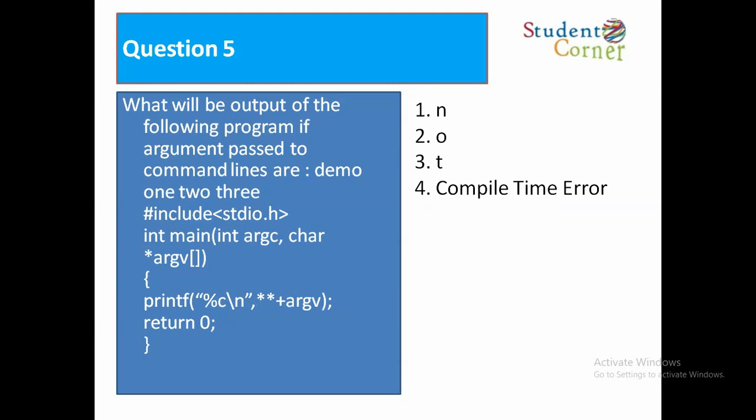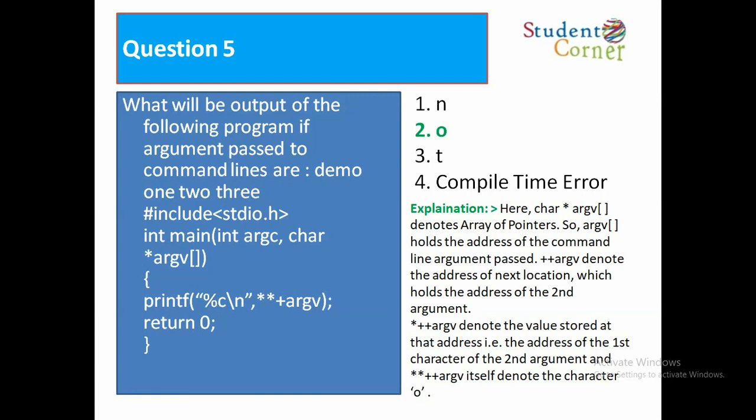Question 5: What will be the output of the following program if arguments passed to command line are demo, demo, 1, 2, 3? Program: #include stdio.h, int main(int argc, char* argv[]), printf("%c", **++argv). Option 1: N. Option 2: O. Option 3: T. Option 4: Compile time error. The answer is O. Here argv denotes array of pointers holding addresses of command line arguments. ++argv denotes the address of the next location holding the second argument. *++argv denotes the address of the first character of the second argument, and **++argv denotes the character O.